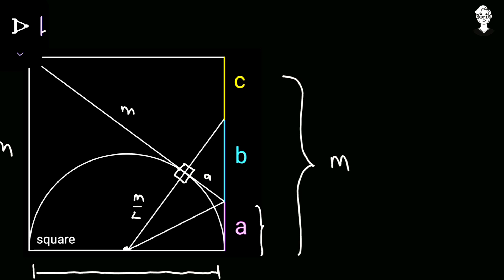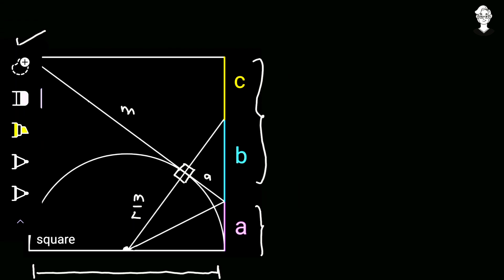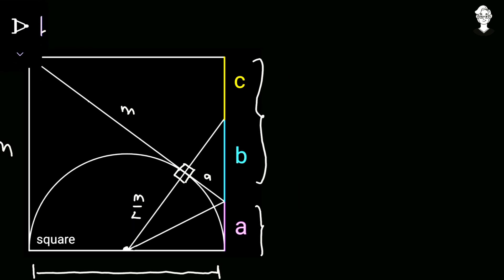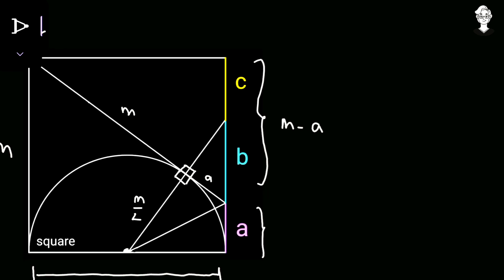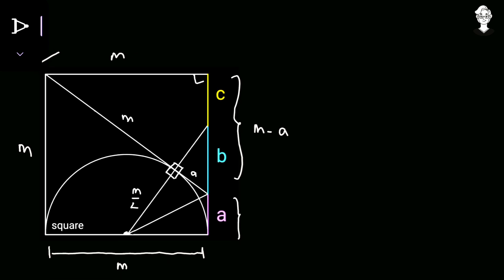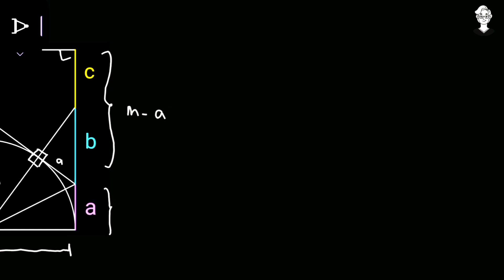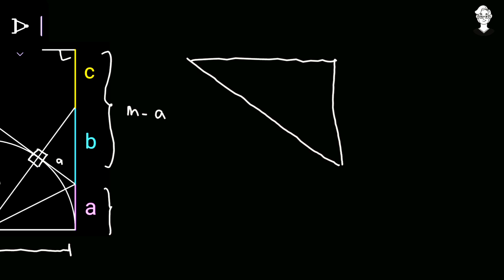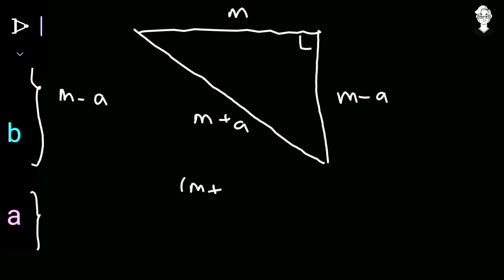This complete length equals M because it is the side of the square. This part equals A, so the remaining length is M minus A. This side of the square also equals M, and there is a 90-degree angle at the corner of the square. So we have a right-angle triangle where one side is M minus A, the other side is M, and the hypotenuse is M plus A.